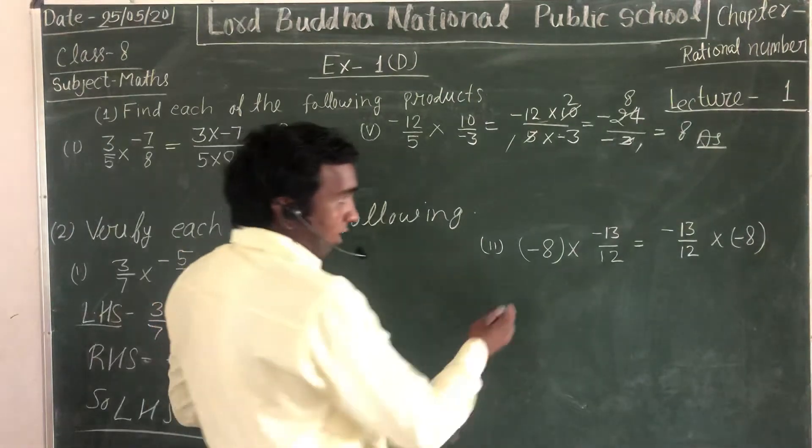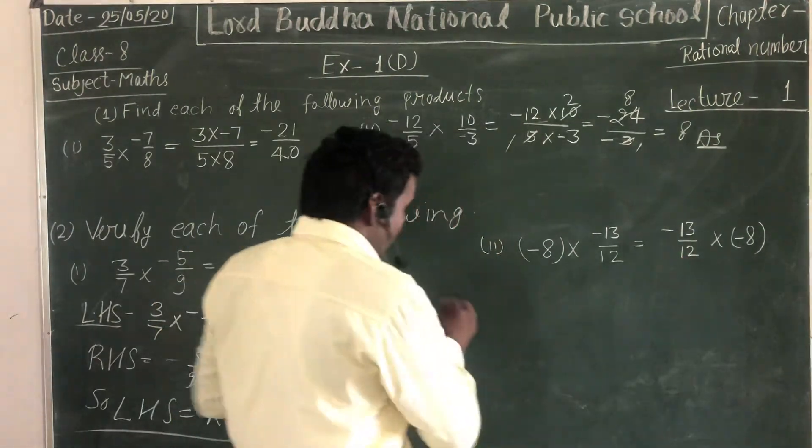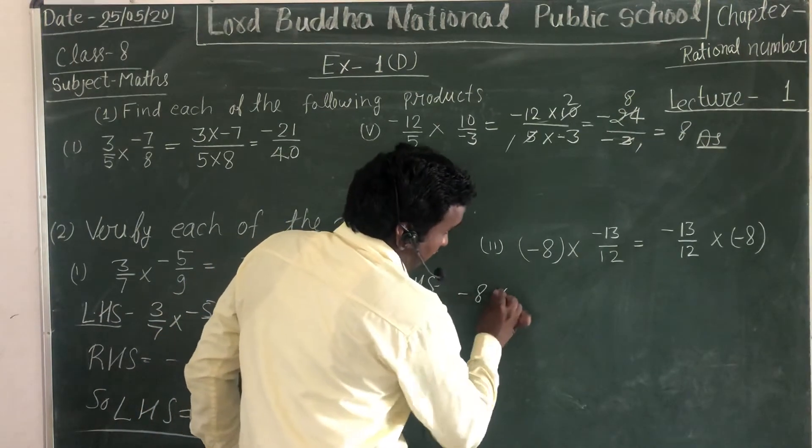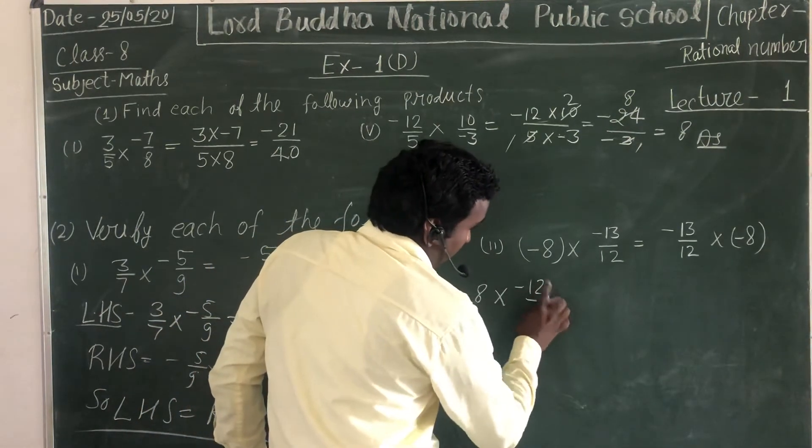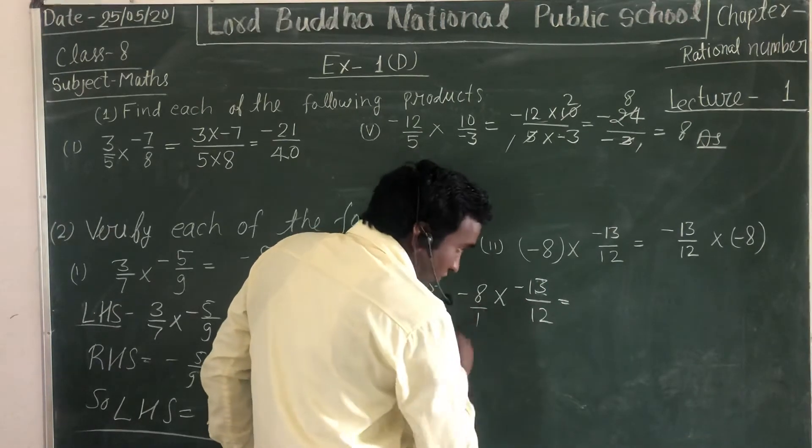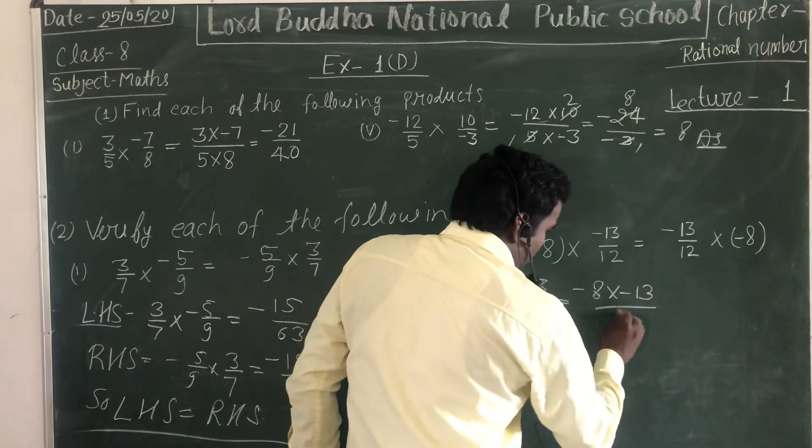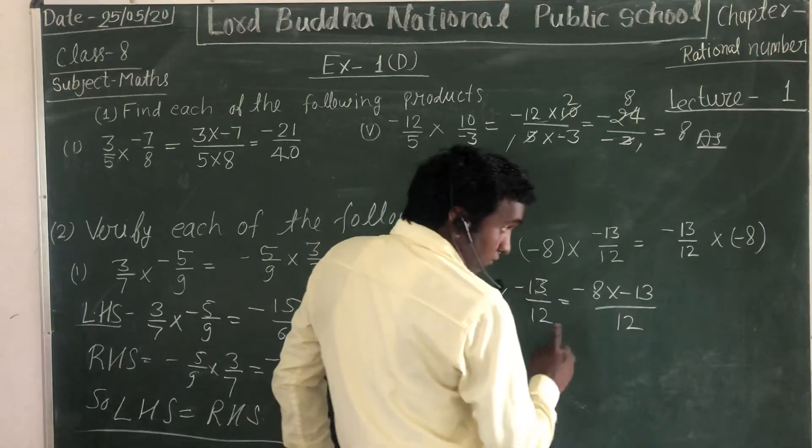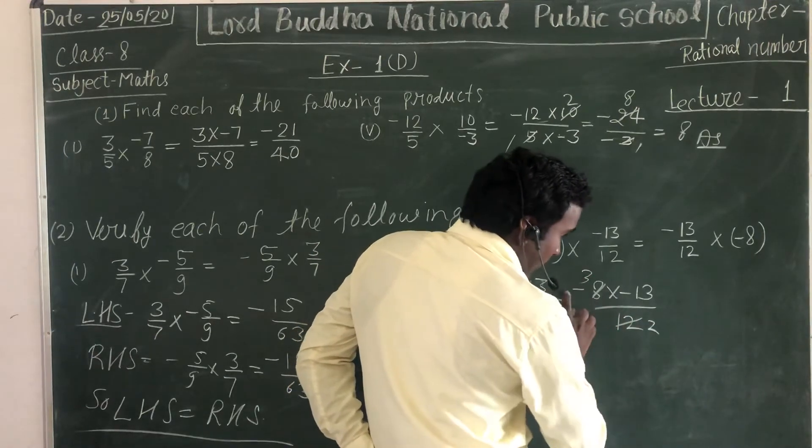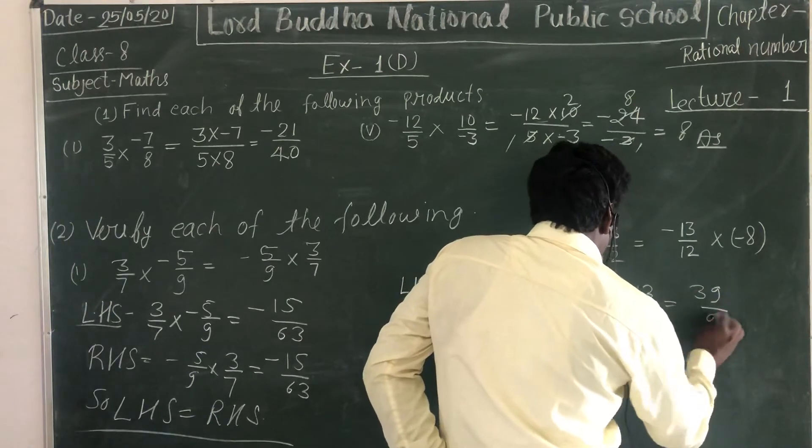For this problem, prove that left hand side equals right hand side. Take the left hand side: -8 times -13/12. Simplifying by dividing by 4: 8 divided by 4 is 2, 12 divided by 4 is 3. Minus times minus gives plus, so we get 2 times 13 over 3, which is 26/3.